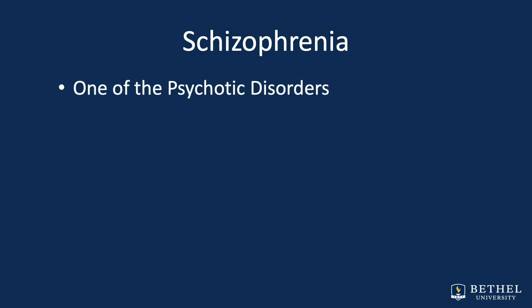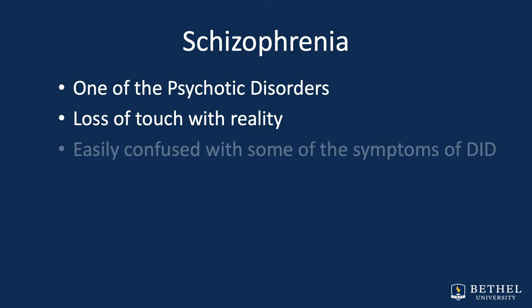Shifting gears, let's turn to schizophrenia. I mentioned I want to make sure you understand the difference between Dissociative Identity Disorder and schizophrenia. Schizophrenia fits under what the DSM refers to as psychotic disorders. Schizophrenia is often confused with dissociation because of the psychosis that is typical to schizophrenia. An individual with schizophrenia is seen as losing touch with reality, which can be easily confused with someone shifting from one identity to another in DID, dissociative amnesia's loss of autobiographical information, or depersonalization-derealization disorder's detachment from oneself or one's surroundings.